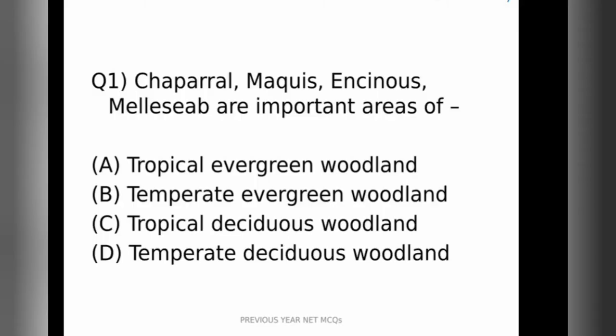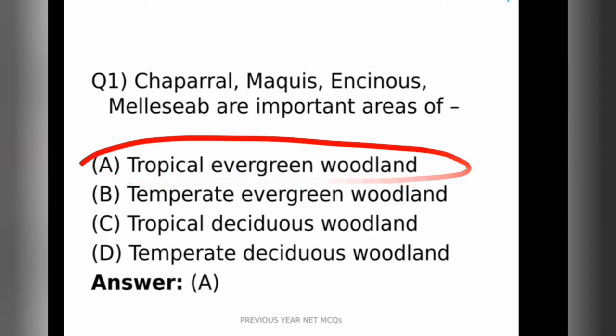The first question is: Chaparral, Maquis, Inquinos and Merisiv are important areas found in which kind of woodland. Here are the options in front of you. The correct answer is option A. So these areas are found in the tropical evergreen woodland parts of the earth.